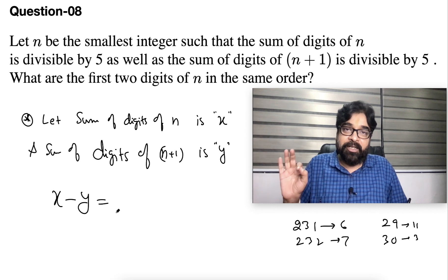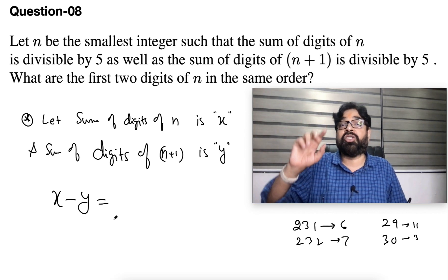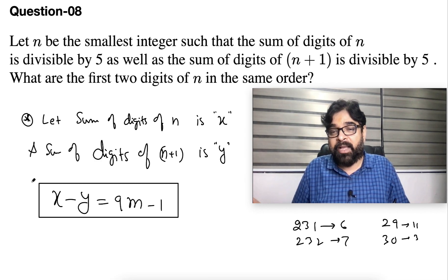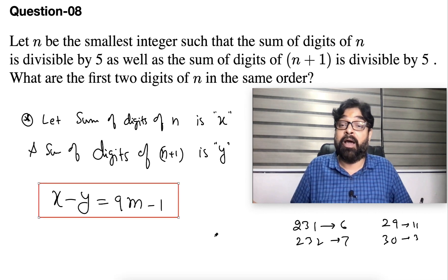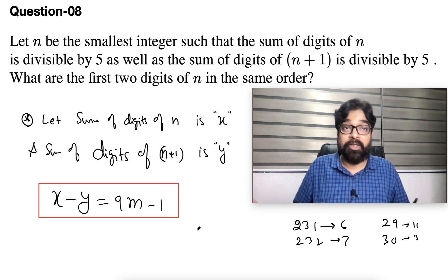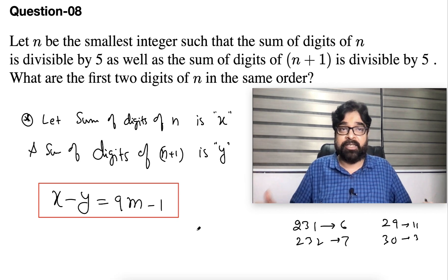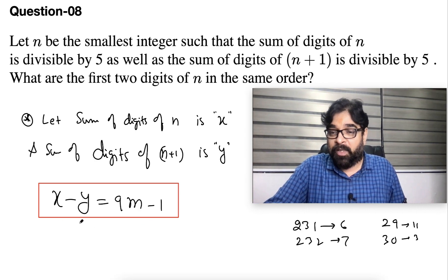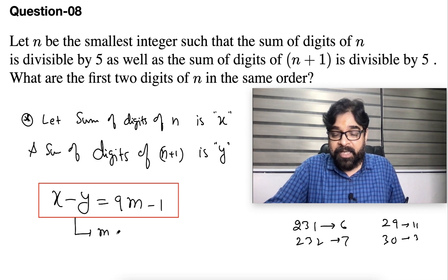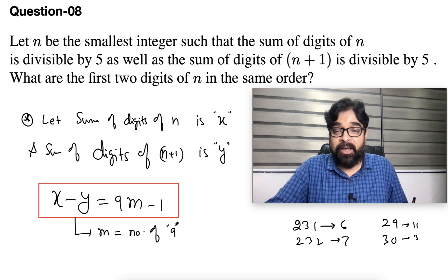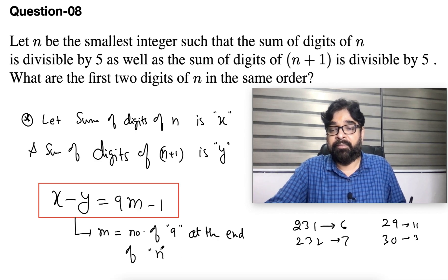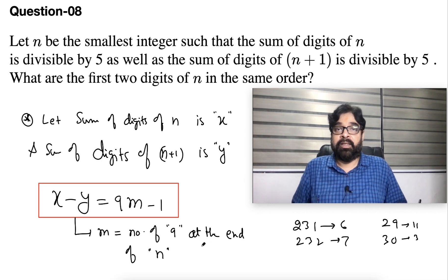So x minus y, difference of sum of digits of 2 consecutive numbers is always 9m minus 1. Is always 9m minus 1. You are going to write RMO also, I hope this will get clear. Those who are getting clear, those who are not getting clear, nothing to worry. If you are in 8, 9, 10 class, you can write next year also. The best thing is that we should learn something new.